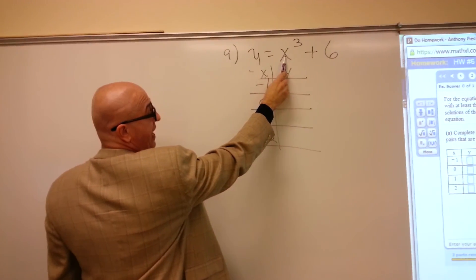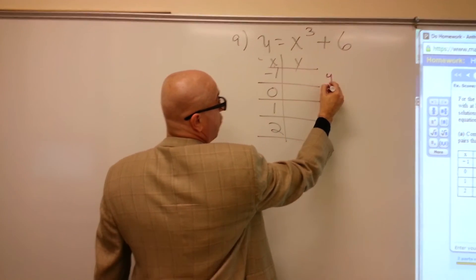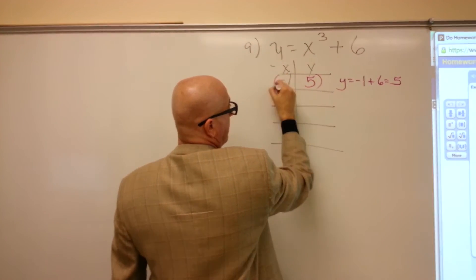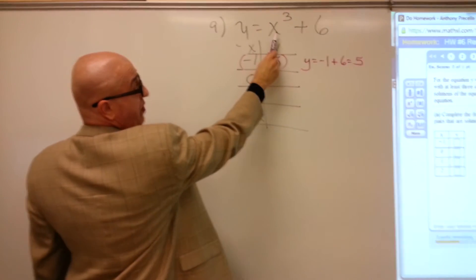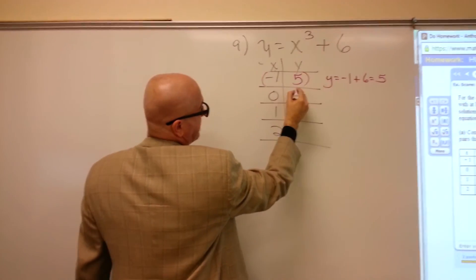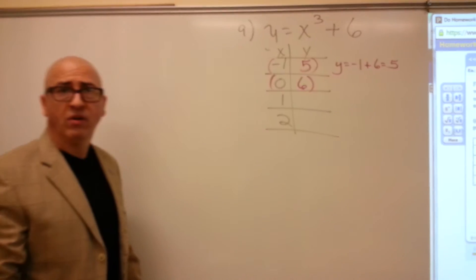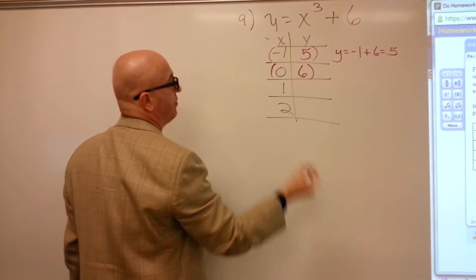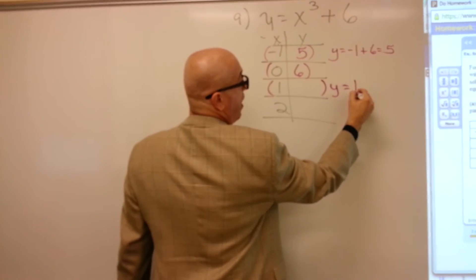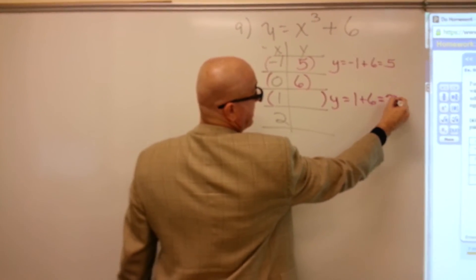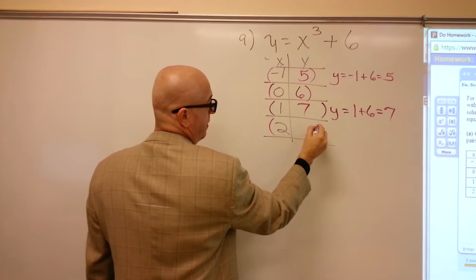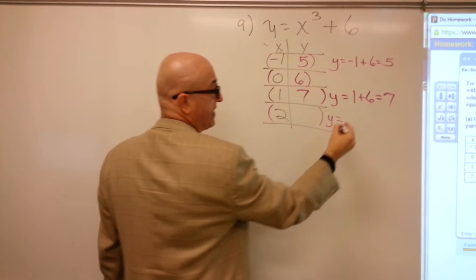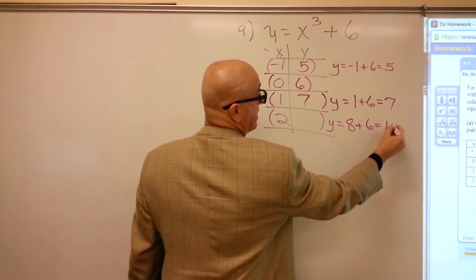Negative one times negative one times negative one is negative one. So we have negative one plus six. That's a five. Plug in a zero in. That's pretty easy. Zero plus six. Six. Plug a one in. That's pretty easy too. One cubed is one plus six is seven. Then plug a two in. Two to the third. Two times two times two is eight. Plus six, 14.